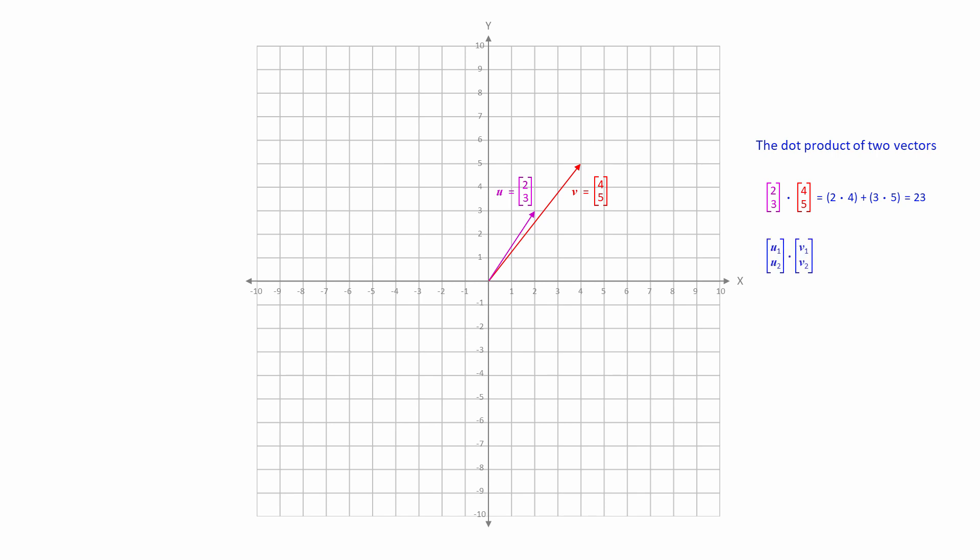If we label the components of each vector u1, u2, v1 and v2, then algebraically we can describe the method for calculating the dot product like this.